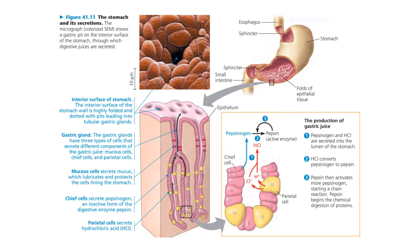Pepsin splits the polypeptide chains of proteins into smaller polypeptides, which will be broken down further in the small intestine.